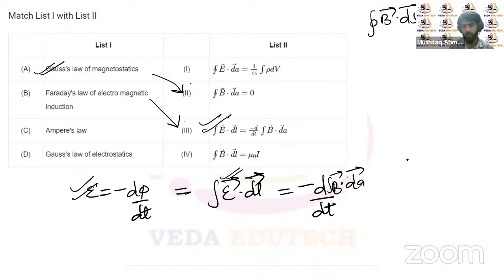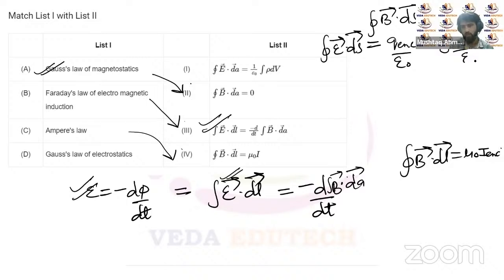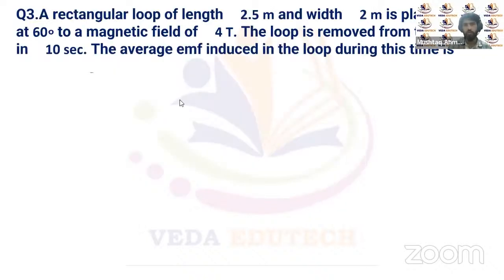For Gauss law of electrostatics: ∮E·dS equals charge enclosed divided by ε₀, where total charge is the integral of volume charge density over volume. The correct equation is equation one. So the correct matches are: Gauss magnetostatics → eq. 2, Faraday's → eq. 3, Ampere's → eq. 4, Gauss electrostatics → eq. 1.